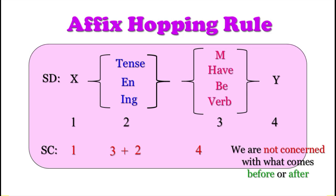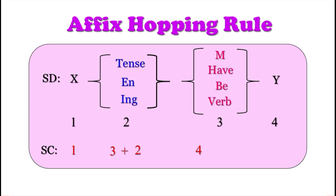Then we write the structural description of the affix hopping rule and apply the structural change required. X (number one) and Y (number four) remain in the same place — no change is made to them. For the affixes and verbal constituents (numbers two and three), we reverse their order: instead of affix then verb, we write number three plus number two — that is, the verbal element followed by the affix attached to it. This is the affix hopping rule.